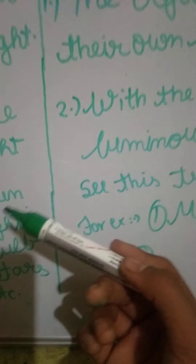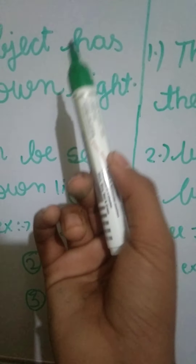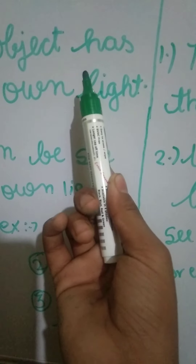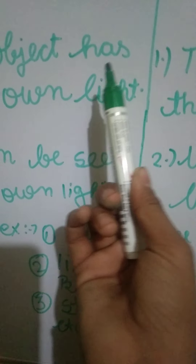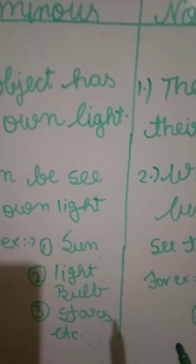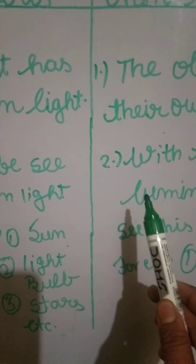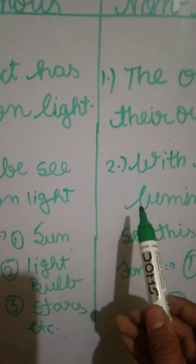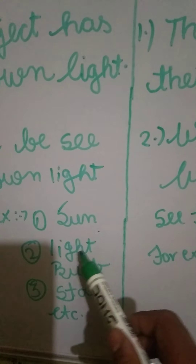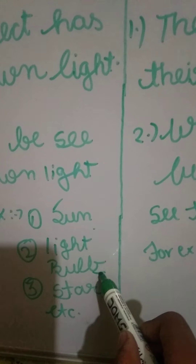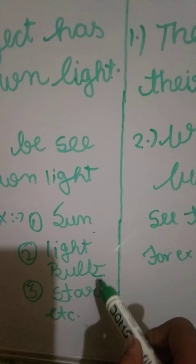For example, you can see the moon with light. But if the light is off and the phone will be off, then you will not see the moon. The light bulb is a luminous object — it has its own light.